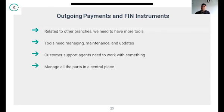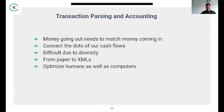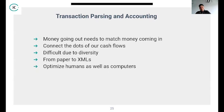We use financial instruments and outgoing payments, combining specialists and systems to create the best possible way to acquire flights. All of this requires management in a central place — the outgoing payment systems. Finally, we have transaction parsing and automated accounting, solved by a service called TRAP. We basically want to create a paper trail from the customer payment to the payment out to the airline — money going out needs to match money coming in. We connect the dots of our cash flows and create clear audit systems. This is difficult due to diversity — believe it or not, some people still send us reports on paper today.